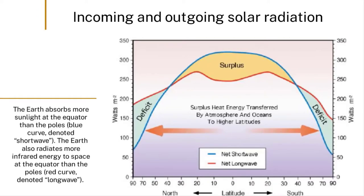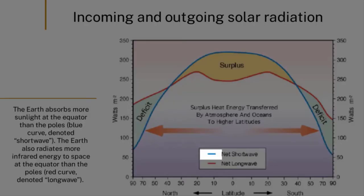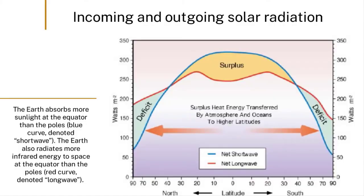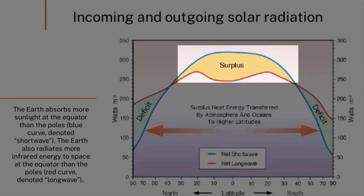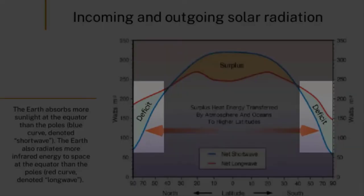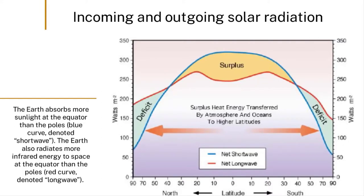This latitudinal distribution is similar to incoming solar radiation, however comparing the two distributions reveals that there is more incoming than outgoing radiation at the equator, and more outgoing than incoming at the poles. This means there is a net heat gain at the equator and a net heat loss at the poles. Yet over long timescales, equatorial regions haven't been continuously increasing in temperature, nor have polar regions been continuously decreasing — they remain somewhat steady over a long period of time.